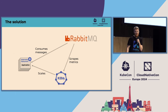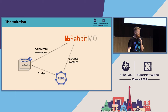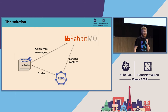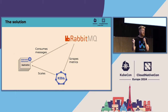Luckily, we have KEDA, and KEDA does exactly this. It scrapes metrics from external sources — or consumes custom metrics from those sources — and based on those metrics decides to scale up the application. It also solves the problem of scaling to zero, which HPA cannot do. Importantly, KEDA does not manipulate the data in RabbitMQ — it's secure, we just monitor the metrics.